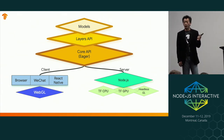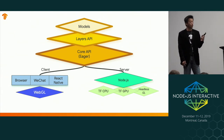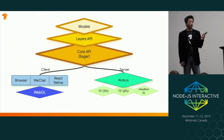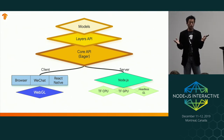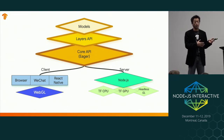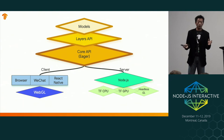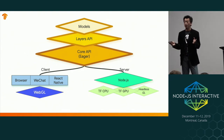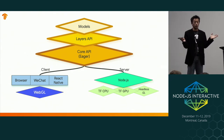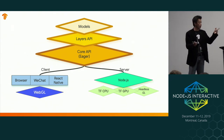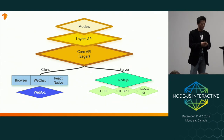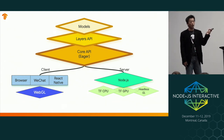We also have something called Atlas GL. What it does is give GPU acceleration on devices that don't support CUDA — for example, IoT devices that usually don't have good GPU drivers can use this as well. It provides the WebGL API as an alternative acceleration path.